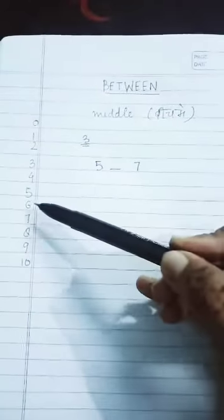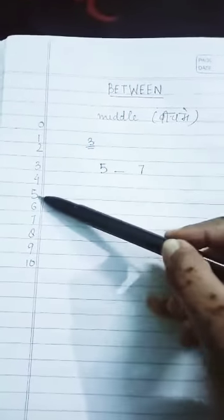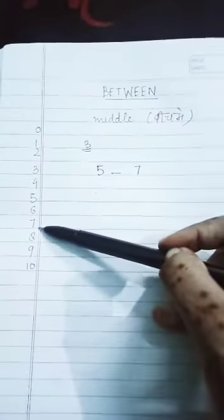So we will check the number line and see that after four this is five, then six, then seven.